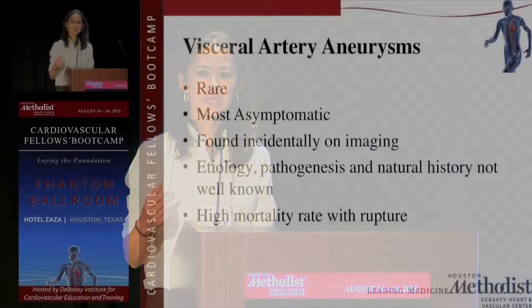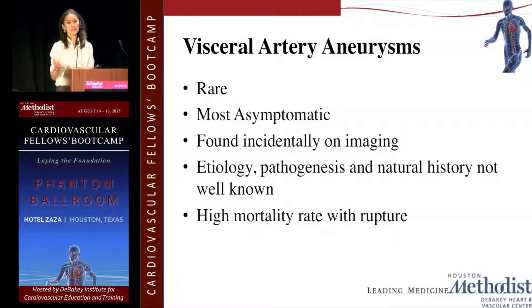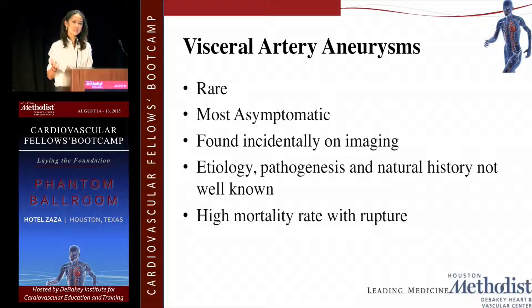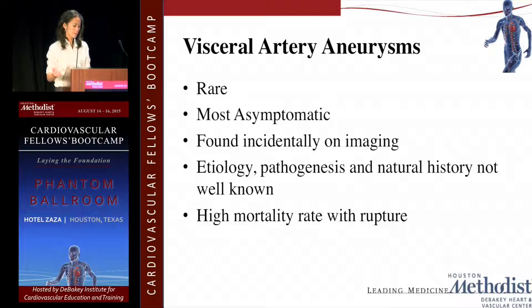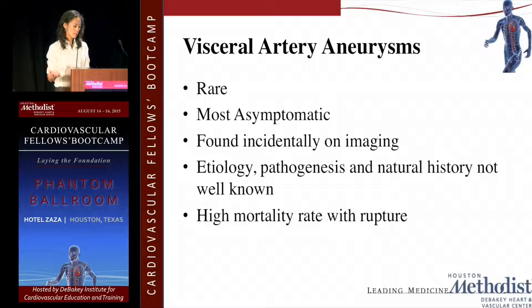What I'm going to talk about is very rare. Mesenteric occlusive disease is rare, and artery aneurysm disease is even rarer in this group. Most patients are asymptomatic, and these visceral artery aneurysms are typically found on CT scan, MRI, or ultrasound done for other reasons — really incidental findings. The etiology, pathogenesis, and natural history of visceral artery aneurysm is not really well known. It's not your typical atherosclerotic aneurysm like aortic or peripheral aneurysms, but it is important to recognize because it can be lethal — a ruptured splenic artery can lead to death.